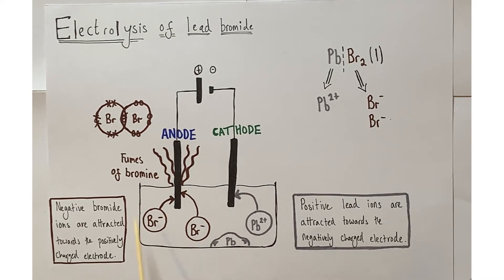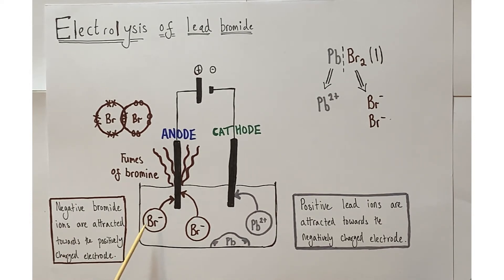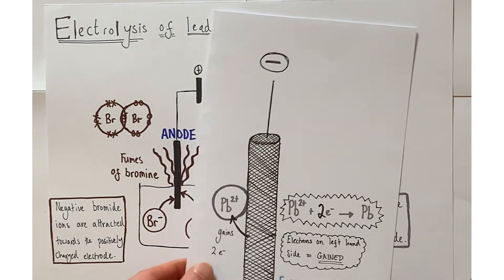Once we apply the positive and negative current — producing the anode and cathode — and place them into the molten electrolyte, the positive lead ions (Pb²⁺) migrate and are attracted towards the negative cathode. Simultaneously, the bromide ions (Br⁻), being negative anions, are attracted and migrate towards the positive anode. Over time we see a small deposit of silvery lead appearing at the cathode, and orange-brown fumes of bromine gas being released at the anode.